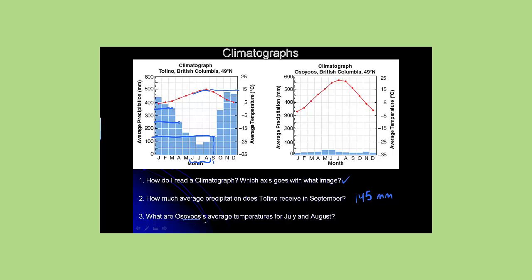What are Osoyoos's average temperatures for July and August? We look at Osoyoos, go to Osoyoos's climatographs. We're looking at temperatures, so we're going to use the temperature axis on this side. Temperatures for July and August, find those months, go up to the data points, and find that that would be 20. We're in between 20 and 25. July is slightly higher, at about 23, and August would probably be about the 21 mark.